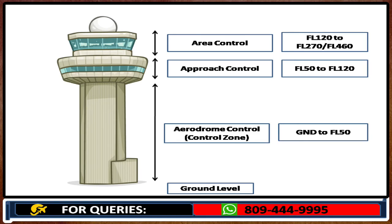I hope you have understood everything we discussed today — it is a really very important topic. Watch it a couple of times and try to understand; in case of anything, get back to me. Because if you do not understand these ATC functions, limits, and how to read charts, you can get zero out of 100. Before proceeding further, you should know how to identify ATC on charts — what is control, what is approach, what is tower. Go through the charts; we will discuss again with charts to give you the wider picture.